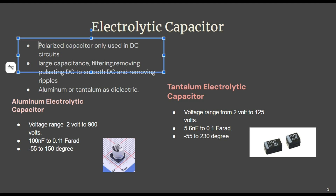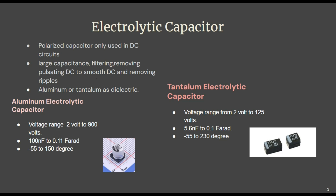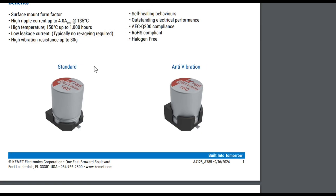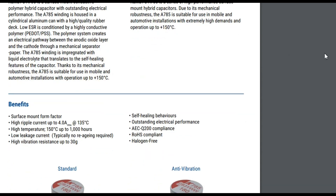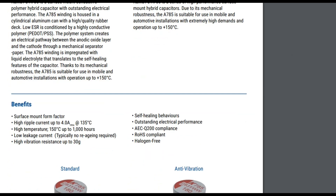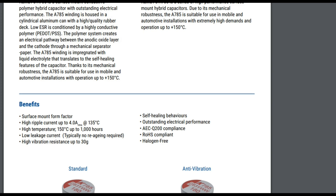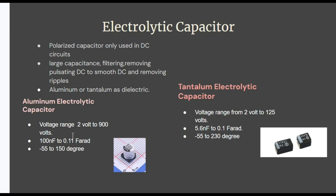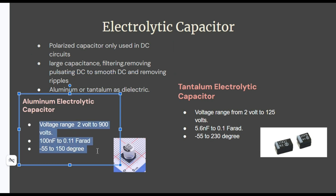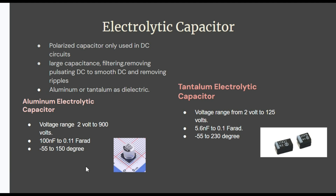First is the electrolytic capacitor. It is a type of polarized capacitor, so they are only used in DC circuits. They provide large capacitance, so they are mostly used in power supplies for filtering, ripple, and noise removal. They use oxide film of aluminum, tantalum, or other metal oxides as dielectric. In the case of aluminum, their voltage range varies from 2 volts to 900 volts, and they can have a very high capacitance range from 100 nanofarad to 0.11 farad. The operating temperature is minus 55 to plus 125 degrees Celsius.